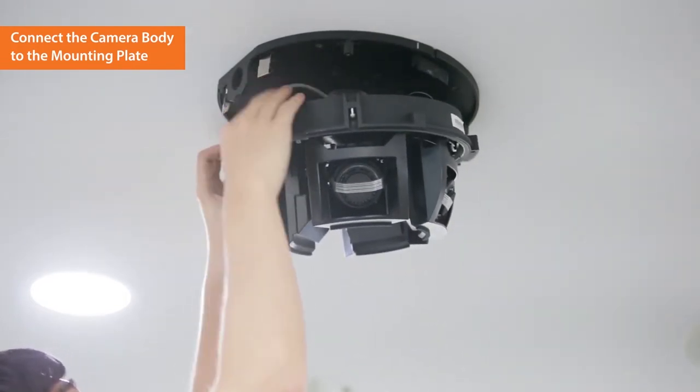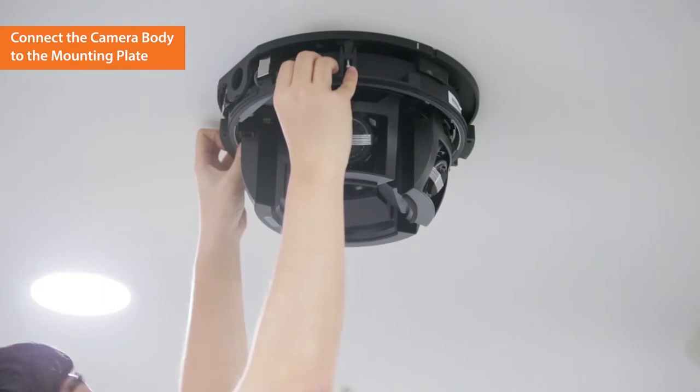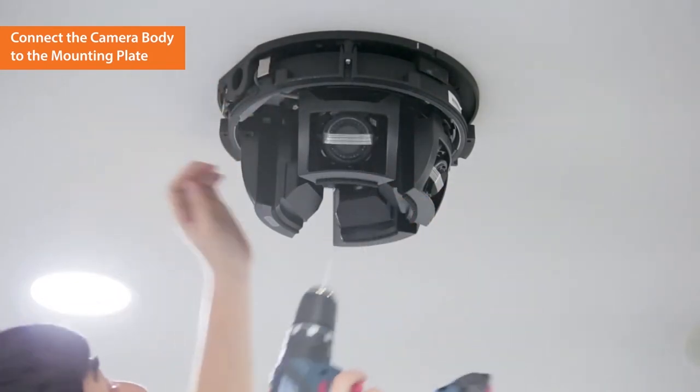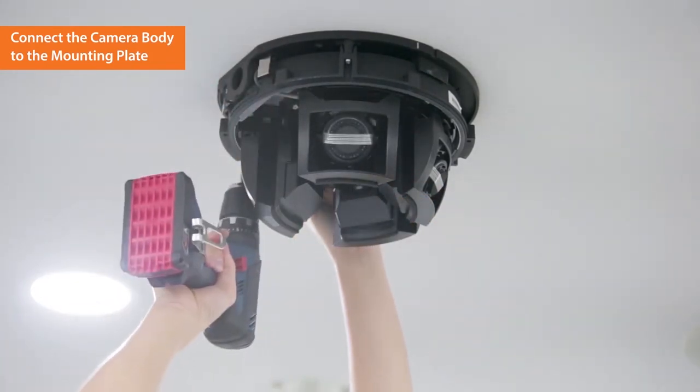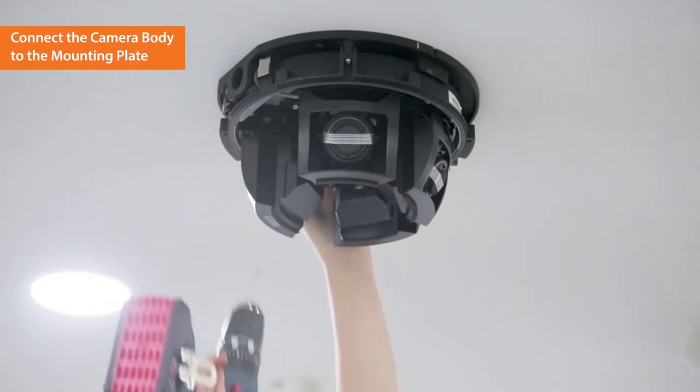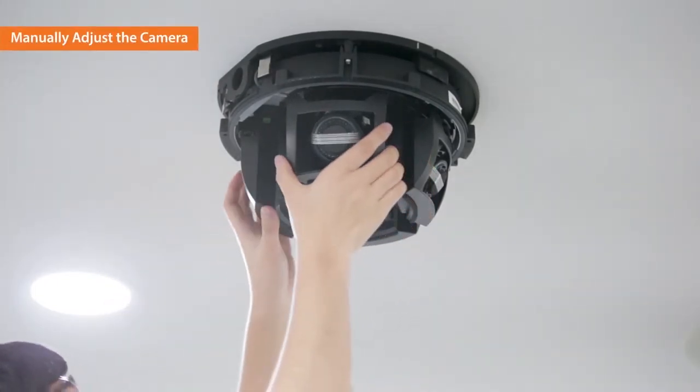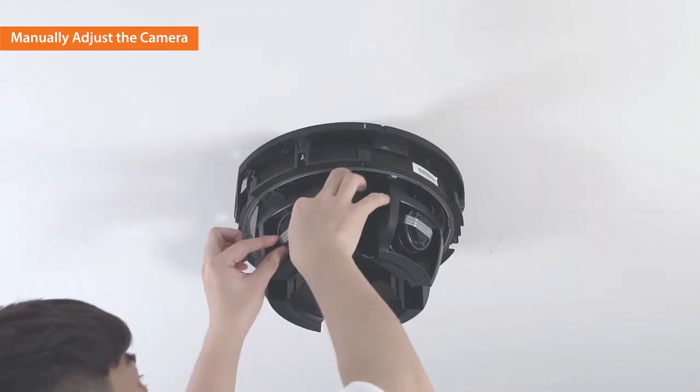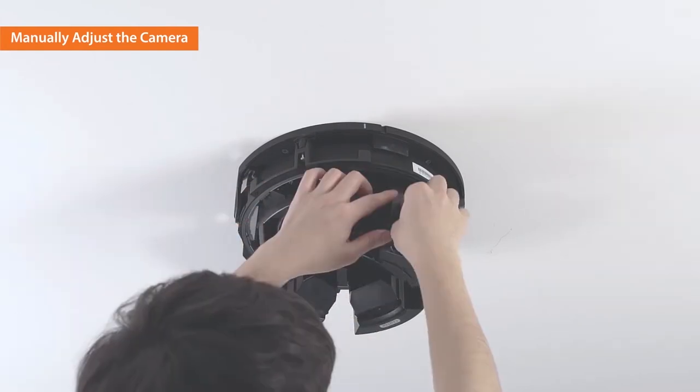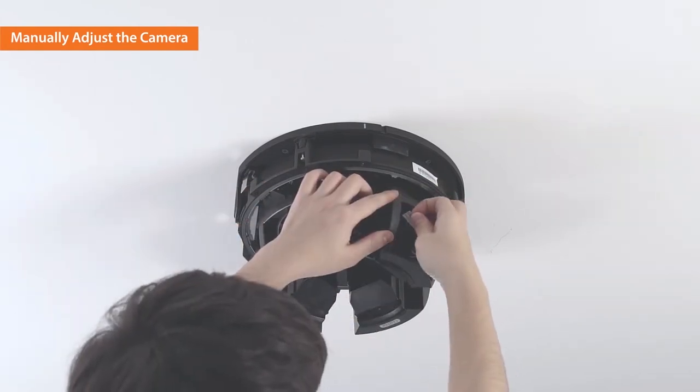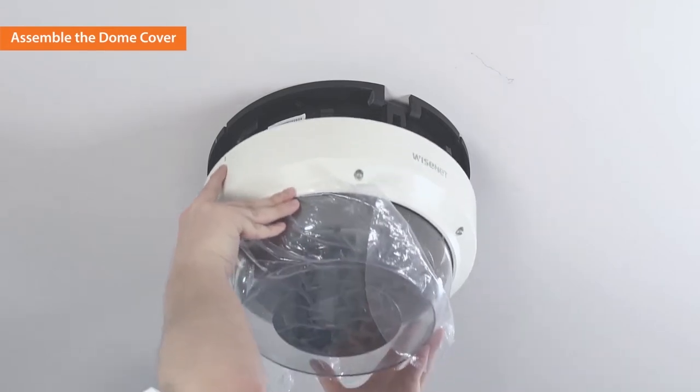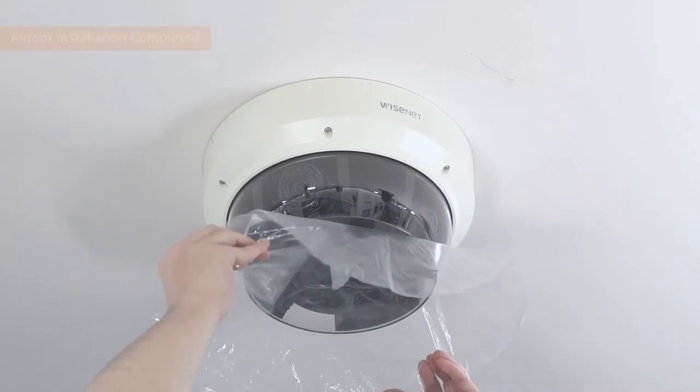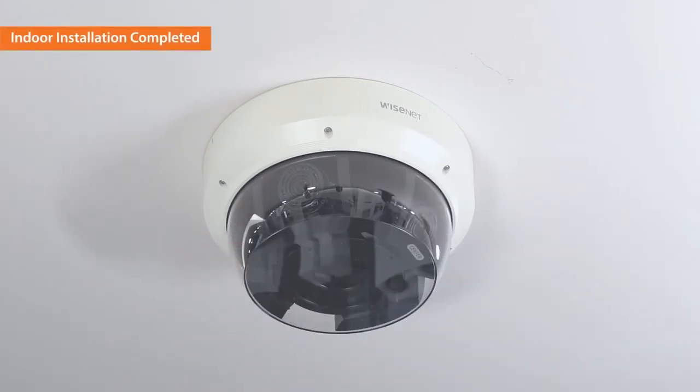Once done, fully connect the body onto the mounting plate and push in the pin spring. Then securely connect the body and the mounting plate by tightening the screws. You can now remove the protective seals from the lenses. Install the dome cover by matching the symbols on both sides of the dome cover and the plate. Indoor installation of multi-directional camera is completed.